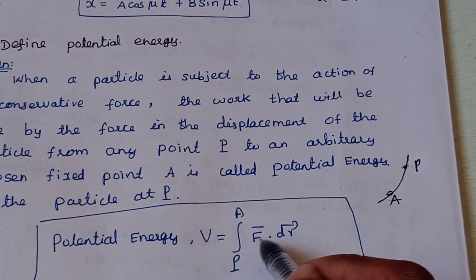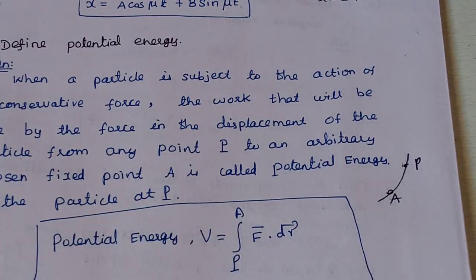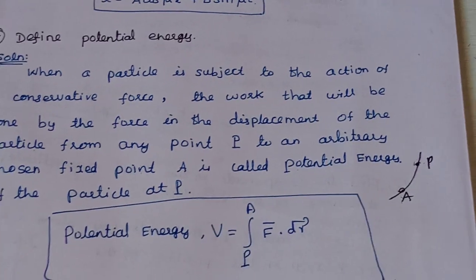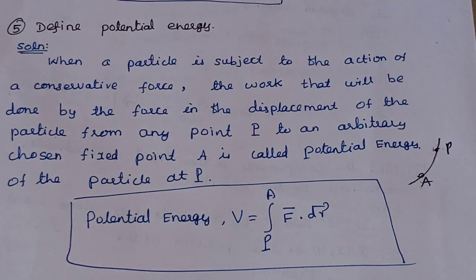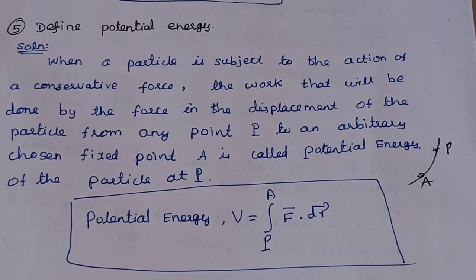The potential energy V equals the integral from P to A of F-vector dot dr-vector. After learning potential energy, we will also learn kinetic energy with its definition in the university paper.